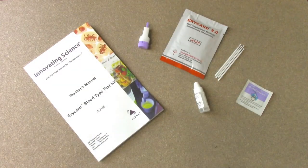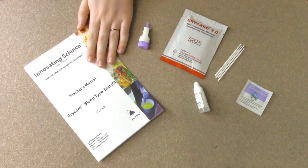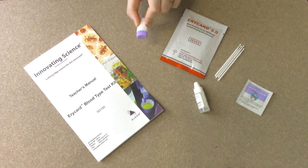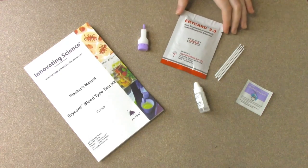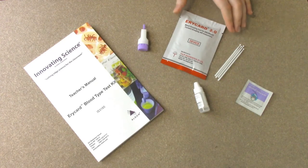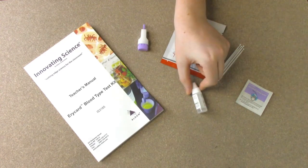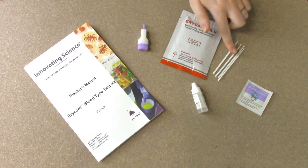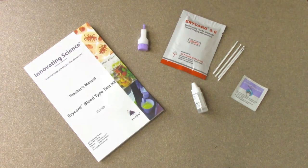Inside this AriCard blood typing kit you will find one instruction manual, a lancet to prick your finger, an AriCard device inside this packet here, a small bottle of buffer solution, four blood collection sticks, and one alcohol wipe pad.